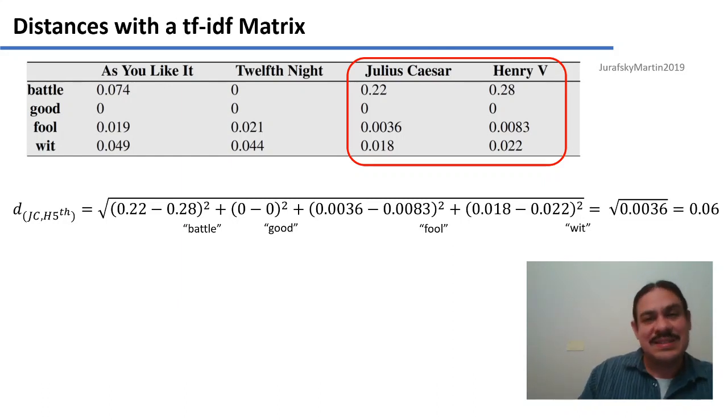This is the distance between Julius Caesar and Henry V using a system with four features: battle, good, fool, and wit.